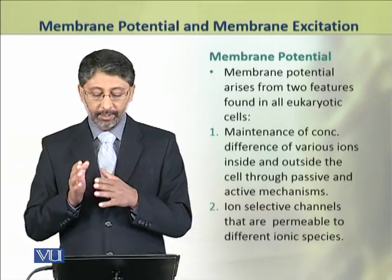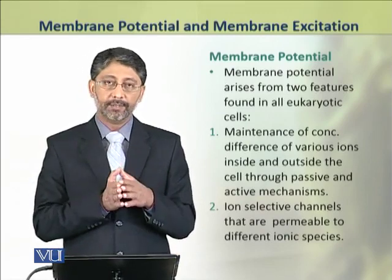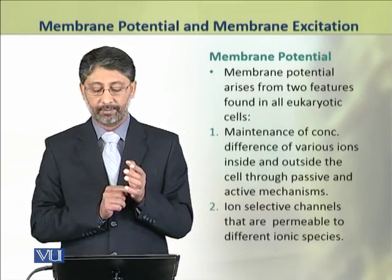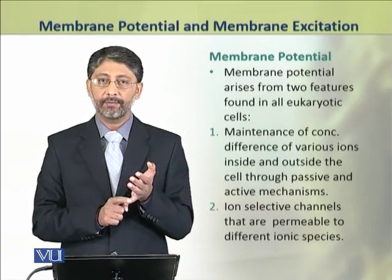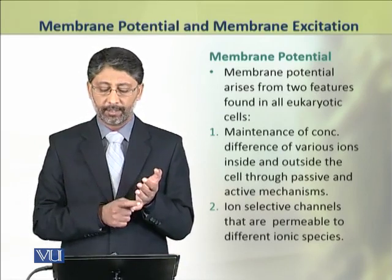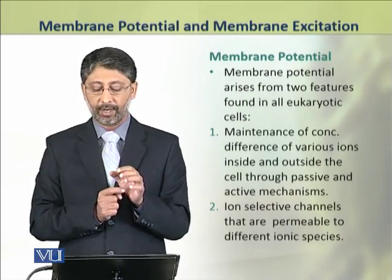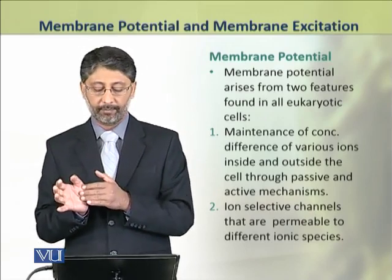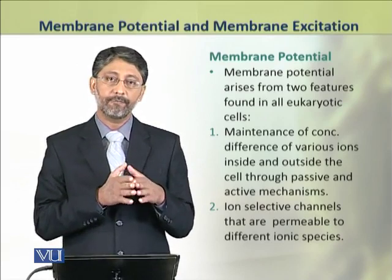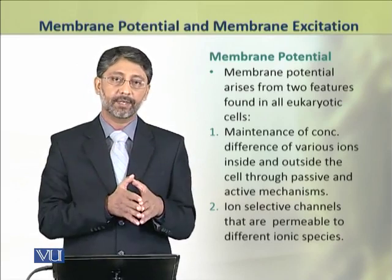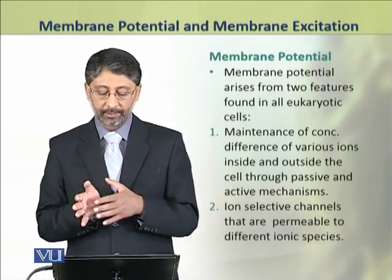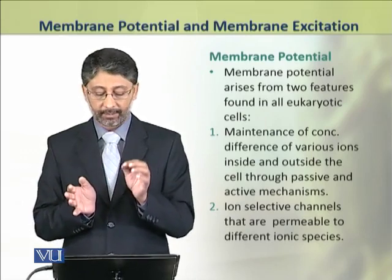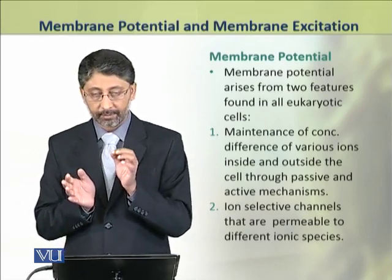The membrane potential arises because of two features found in all eukaryotic cells. One is the unequal distribution and maintenance of different concentrations of various ions inside and outside the membrane. The second is the presence of ion-selective channels that are permeable to various ionic species.